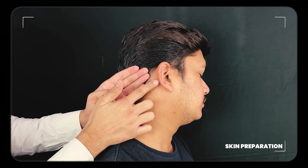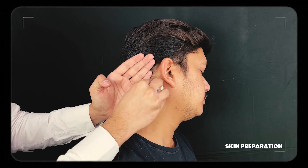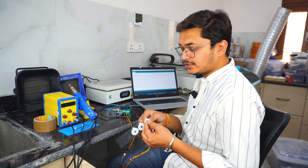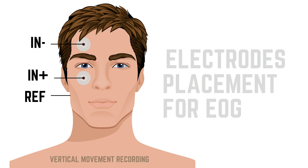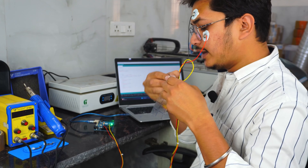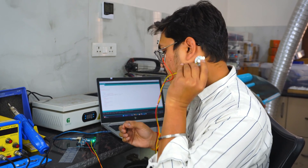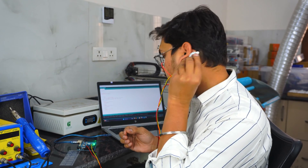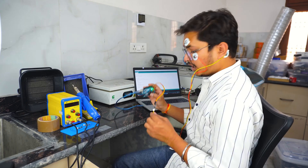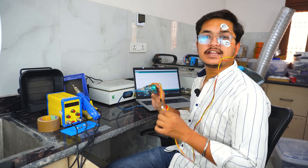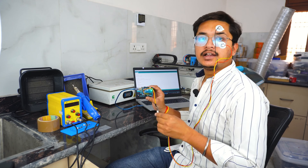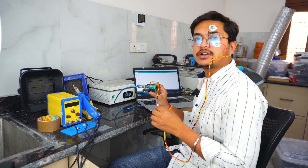Now let's place these electrodes. The negative will go above my eye, the positive cable will go below the same eye, and the reference should be placed behind the ear lobe at the bony part right here. All the connections are finally done, now we can move forward to uploading the code on Arduino Uno R3.